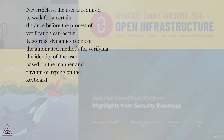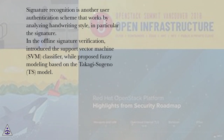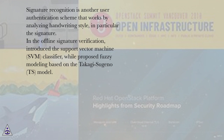Keystroke dynamics is one of the automated methods for verifying user identity based on the manner and rhythm of typing on the keyboard. The support vector machine (SVM) is used as a classifier for system development. Another approach used for keystroke dynamics implementation is random forest. Signature recognition is another user authentication scheme that works by analyzing handwriting style, in particular the signature. In offline signature verification, the SVM classifier was introduced, while fuzzy modeling based on the Takagi-Sugeno (TS) model was also proposed.